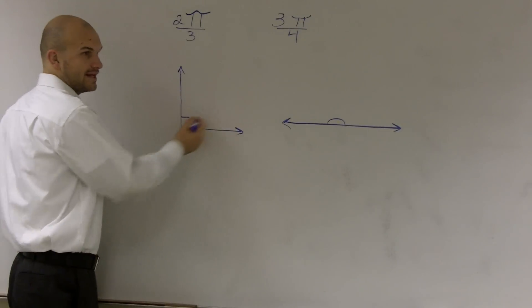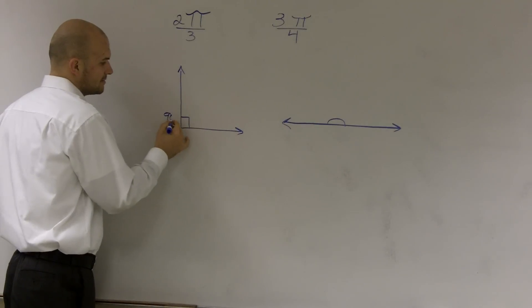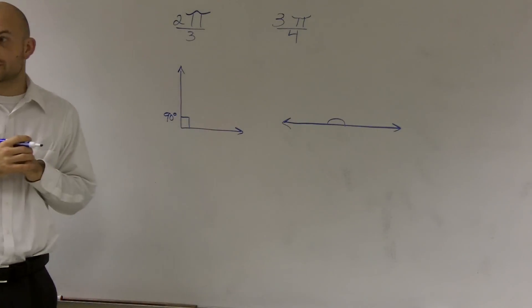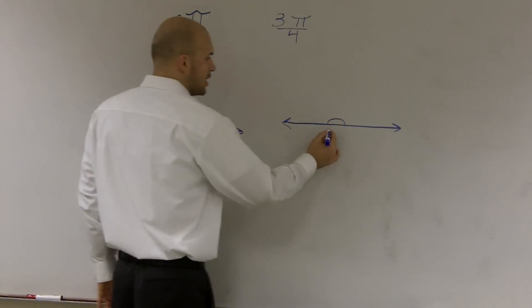Remember, we said that this is what we call a right angle, and it is equivalent to 90 degrees. This is what we call the straight angle, and that was equivalent to 180 degrees.